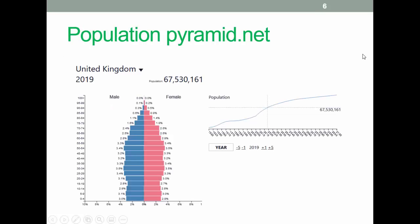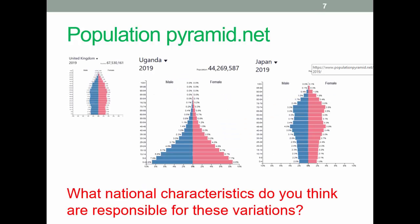I mentioned population pyramids in the previous lecture, so I'll bring that up again. Different characteristics — something for you to have a think about. What national factors do you think are responsible for the variations? Have a look at them and think about what they say about the population distribution in these particular countries.